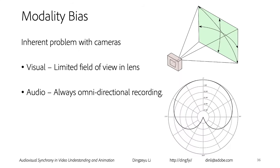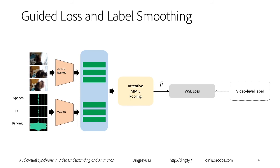I believe this is an inherent problem with all cameras. Visual sensors by design have a very limited view — we can only see what's in front of us. But audio is always omnidirectional recording. Here I show a polar pattern — in our smartphones or mirrorless cameras, it's usually capturing sound from all directions, not just in the field of view. This discrepancy creates modality bias: the event categories that appear in audio modality are always different from those in visual. To alleviate this modality bias problem, we propose guided loss and label smoothing.